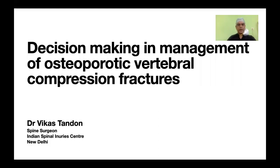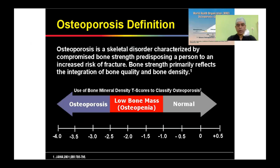Good morning. My talk for this forum is decision-making and management of osteoporotic vertebral compression fractures. Osteoporosis is a skeletal disorder characterized by compromised bone strength, predisposing a person to an increased risk of fractures. Bone strength primarily reflects the integration of bone quality and bone density. Once your T-score on a DEXA scan is less than minus 2.5, we label these patients as osteoporotic.